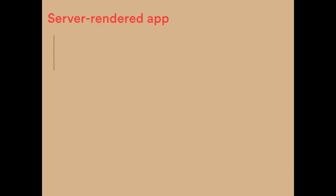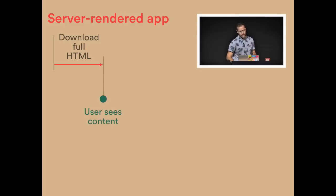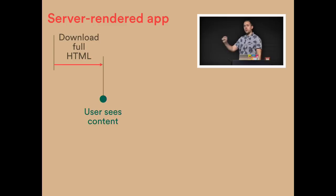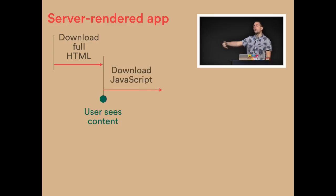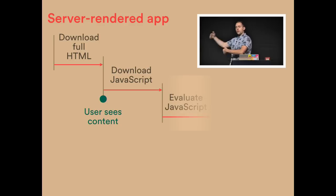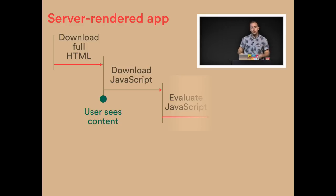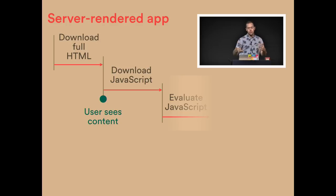Now let's look at a server-rendered app, whether isomorphic or the traditional old-style HTML page. The web browser downloads the full page of HTML, and then the user sees the content. Because we put script tags at the bottom of the page, the browser then downloads and evaluates the JavaScript. The application initializes, but the user can already see the page, interact with it, click on links, and fill out form fields. The perceived performance is even better than the real performance.